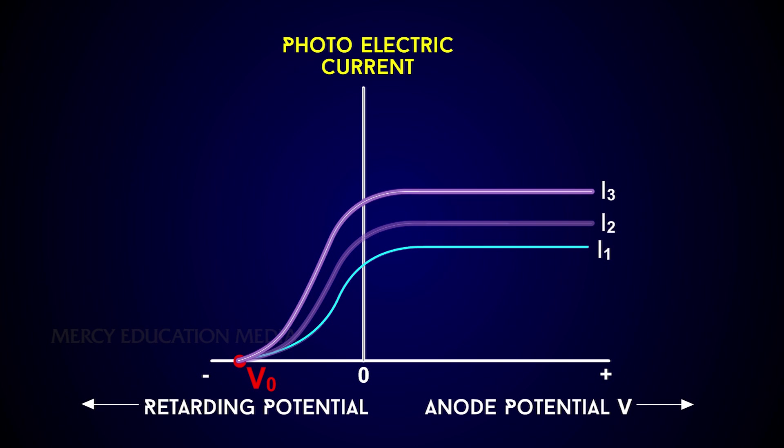Thus, for a given frequency of incident radiation, the stopping potential is independent of its intensity.